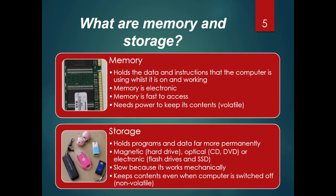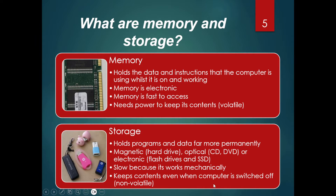So let's talk about memory and storage. Memory holds the data and instructions that the computer is using while it is on and working. Memory needs power to keep its contents — that's why we talk about memory as being volatile, which means when the PC is switched off, everything in RAM gets wiped out. Storage is different in that it holds programs and data far more permanently — when you switch the PC off, those files and folders do not disappear. Therefore it is non-volatile.